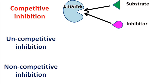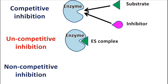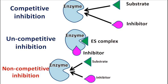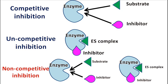Competitive inhibition is a phenomenon in which the substrate and the inhibitor compete for the active site of the enzyme. Uncompetitive inhibition is a phenomenon in which the inhibitor binds the ES complex. Non-competitive inhibition is a phenomenon in which the inhibitor can either bind the active site and compete with the substrate, or it can bind the ES complex directly.